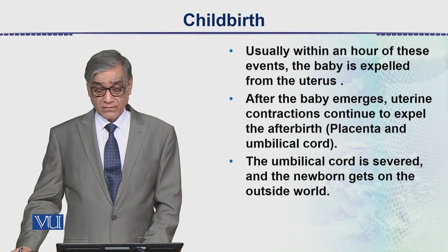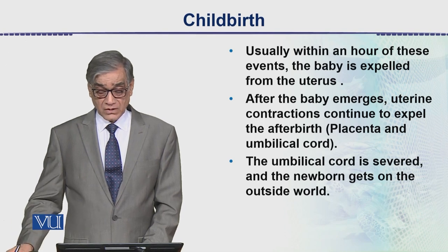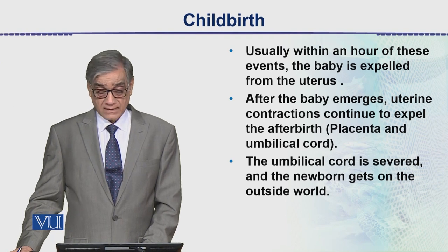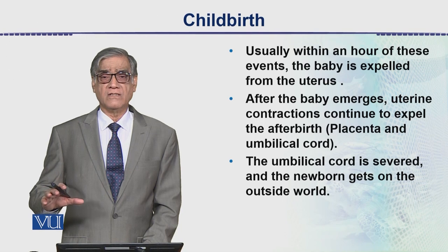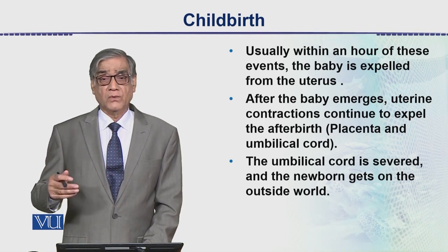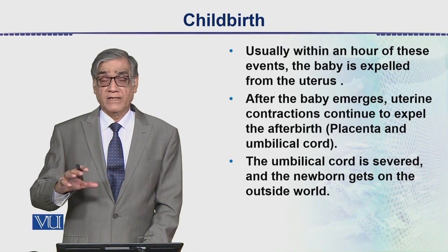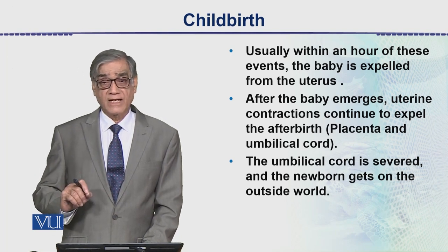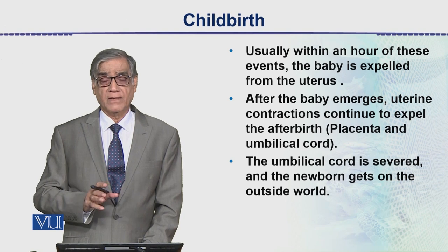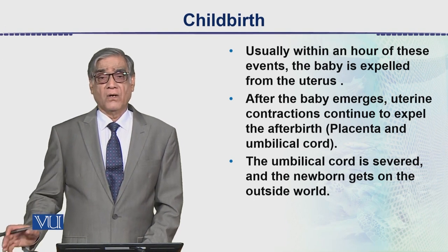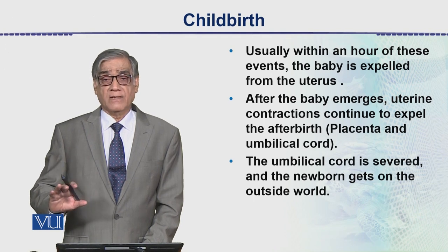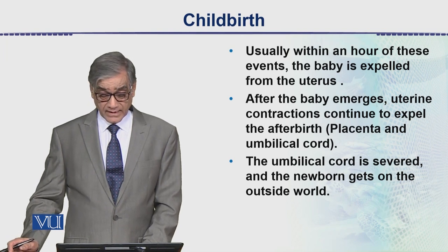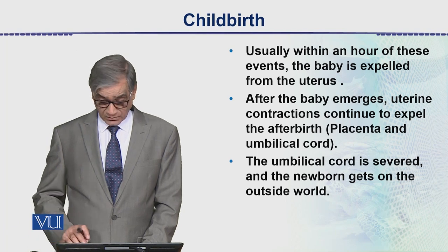The baby emerges head end first, and uterine contractions continue to expel the afterbirth. The placenta is still inside when the baby comes out; the umbilical cord also comes out. Clips are applied to the umbilical cord, it is cut in the middle, and the baby gets separated from the mother. The newborn then enters the outside world.